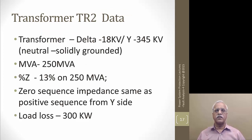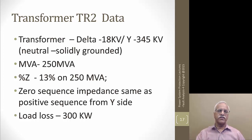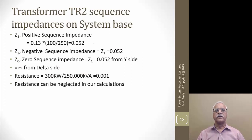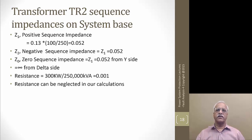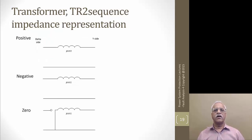For transformer two, the percentage Z is 13% on 250 MVA, and load loss is 300 kW. We convert everything to 100 MVA base, so it becomes 0.052 per unit. The resistance is 300 divided by 250,000, converted by multiplying by 100/250 for the actual value. We have the positive sequence, negative sequence, and zero sequence representations, which are similar to transformer one for generator one.